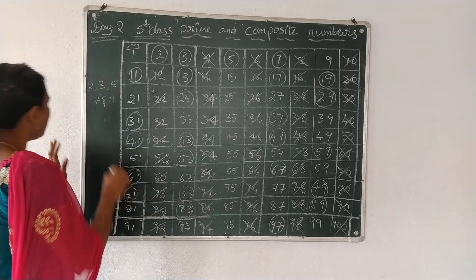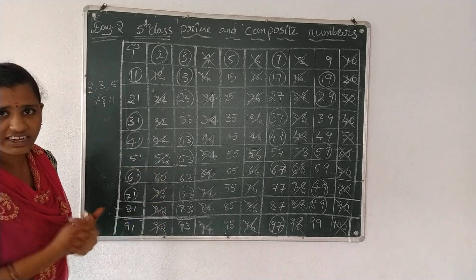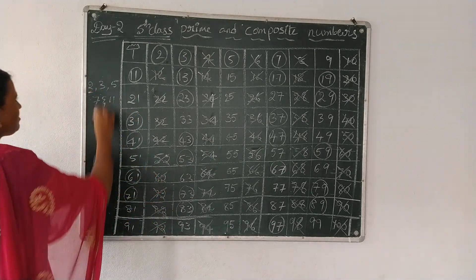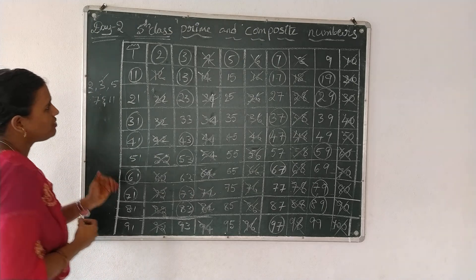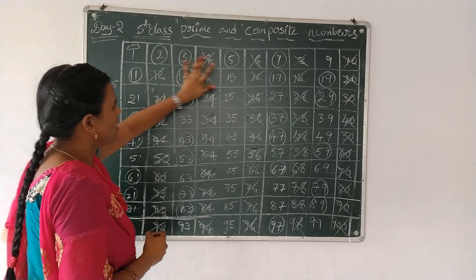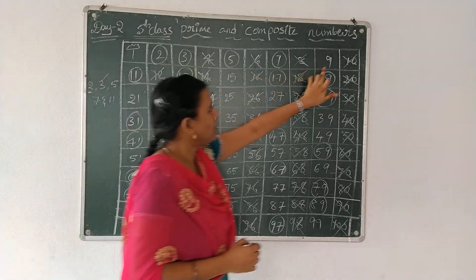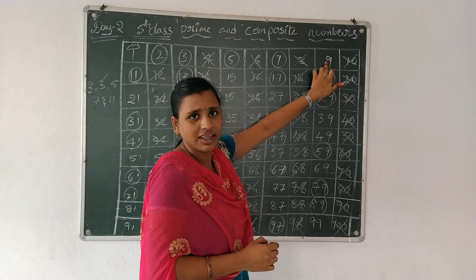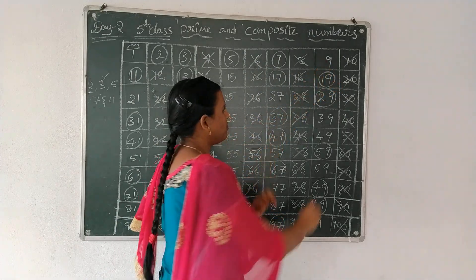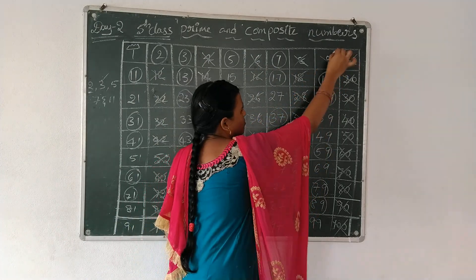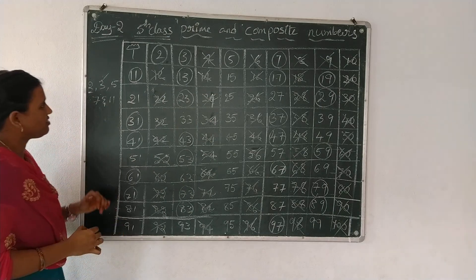The 2 table is completed. Let's see the 3 table. 3 times 1 is 3, then 6, then 9. 9 is a composite number, so cross it.